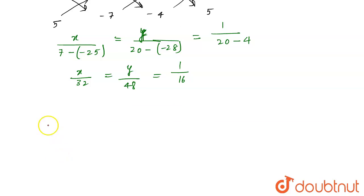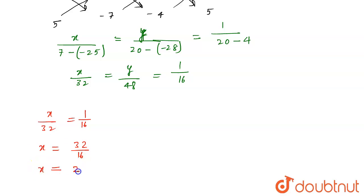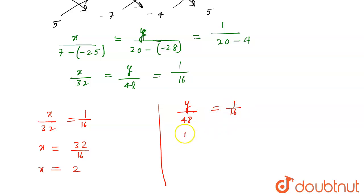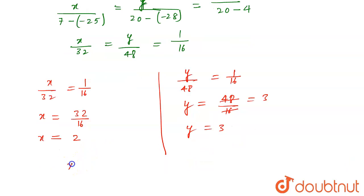Comparing x with the constant term: x upon 32 equals 1 upon 16, so x equals 32 divided by 16, giving x equals 2. Similarly, comparing y with the constant term: y upon 48 equals 1 upon 16, so y equals 3. We have obtained the value of x equals 2 and y equals 3.